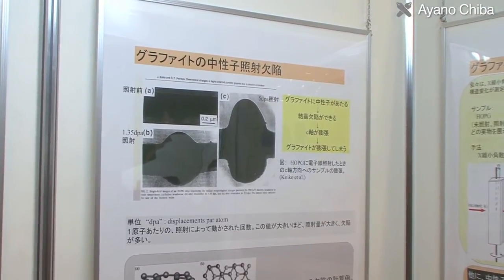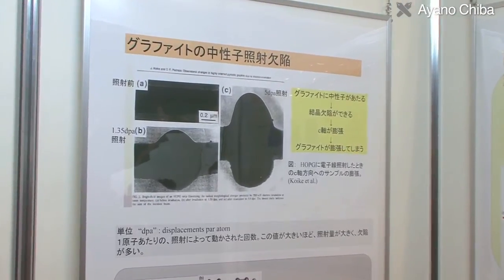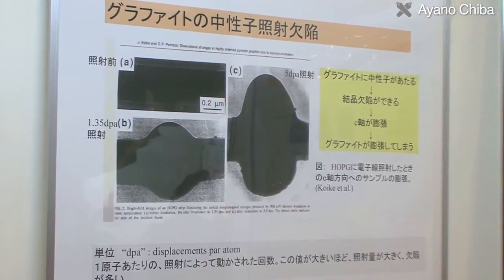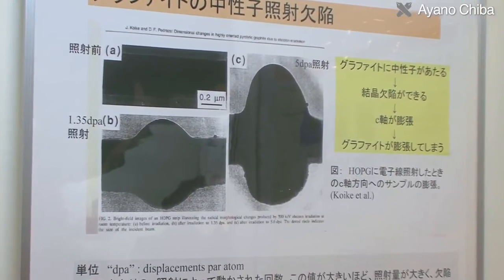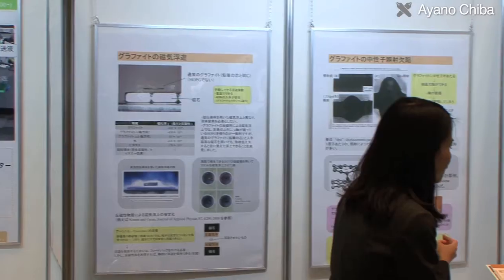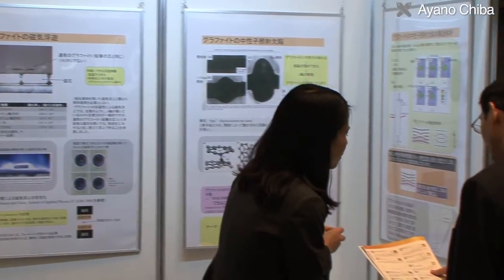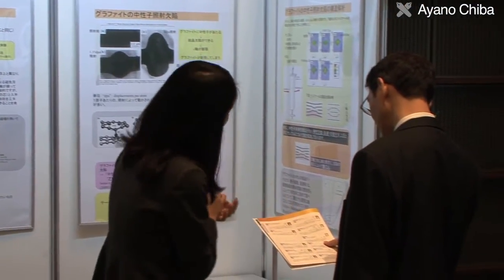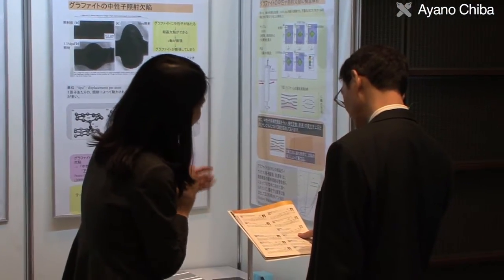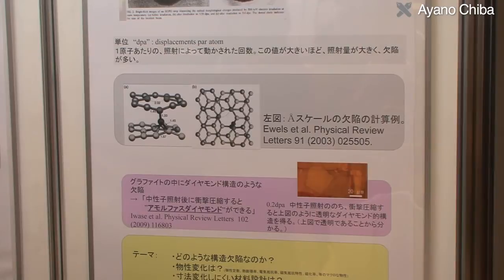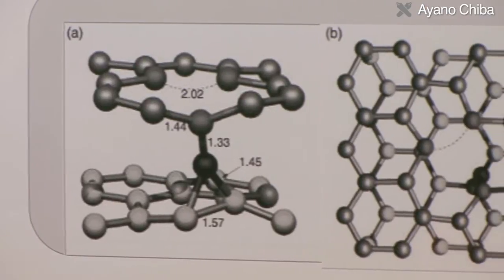Professor Chiba's group are studying defects in crystalline graphite using a variety of methods. In particular, they have succeeded in measuring the state of angstrom- or nanoscale defects by using a very low irradiance of 0.0001 defects per atom.